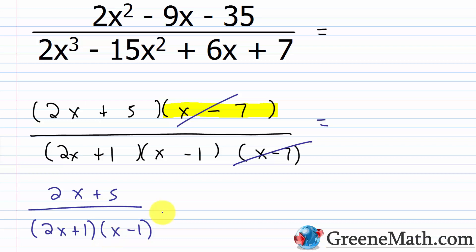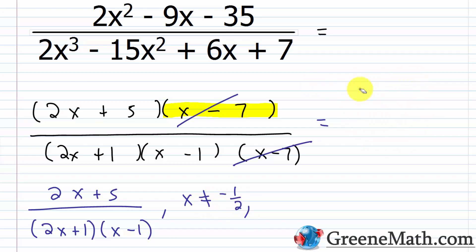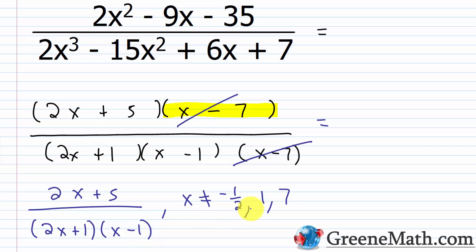We leave the answer in factored form to show nothing else cancels. For restricted values, using the original factored denominator (x - 7)(2x + 1)(x - 1): setting 2x + 1 = 0 gives x = -1/2; setting x - 1 = 0 gives x = 1; and the canceled factor (x - 7) = 0 gives x = 7. So x cannot equal -1/2, 1, or 7. The final simplified expression is (2x + 5) over (2x + 1)(x - 1), with x ≠ -1/2, x ≠ 1, and x ≠ 7.